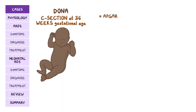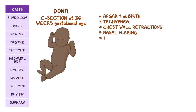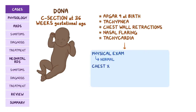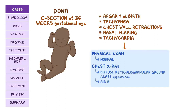Then there was Donna, an infant delivered by cesarean section at 36 weeks gestational age, with an Apgar score of nine at birth. A few hours after delivery she develops tachypnea, chest wall retractions with nasal flaring, and tachycardia. Aside from increased work of breathing, her physical examination findings are normal. A chest x-ray showed diffuse reticulogranular ground glass appearance with air bronchograms.